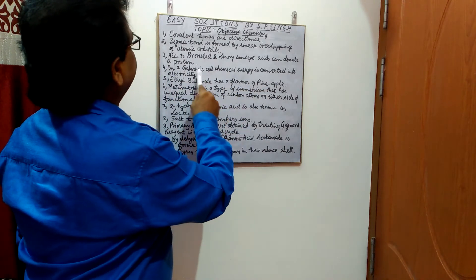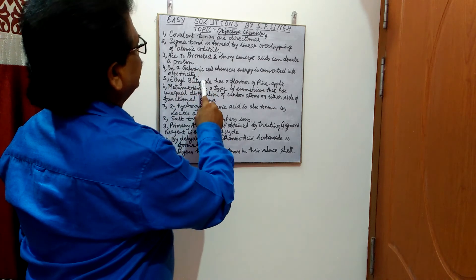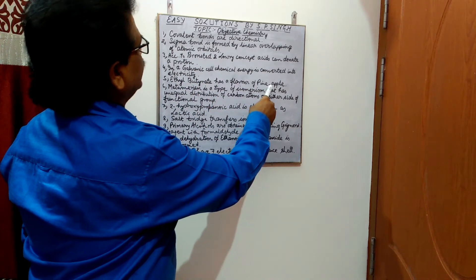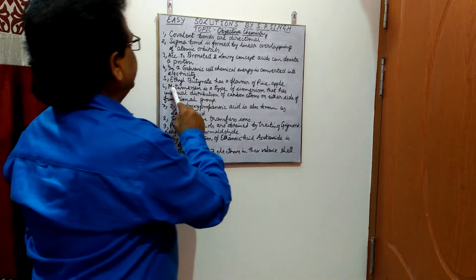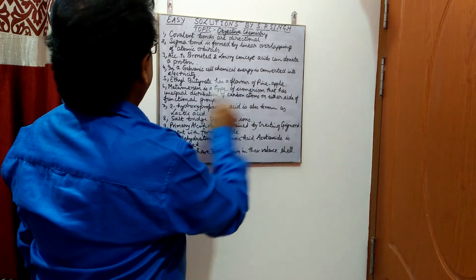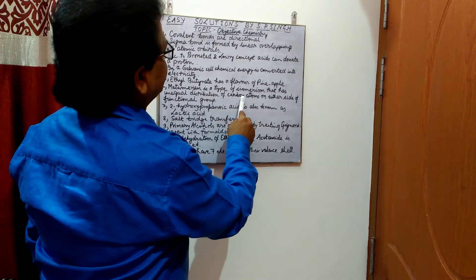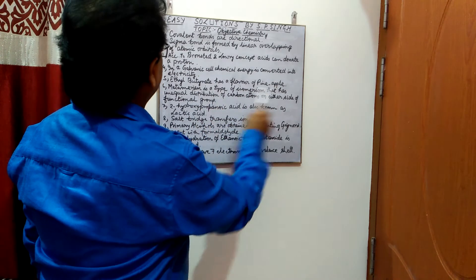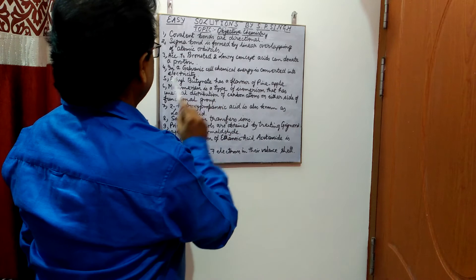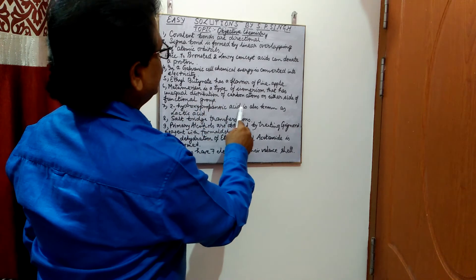Ethyl butyrate has a flavor of pineapple — an important point. Metamerism is a type of isomerism that has unequal distribution of carbon atoms on either side of the functional group.